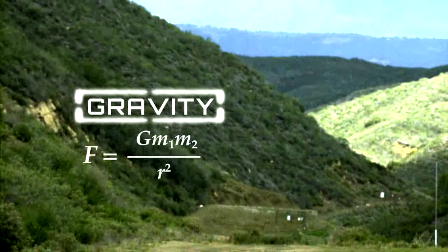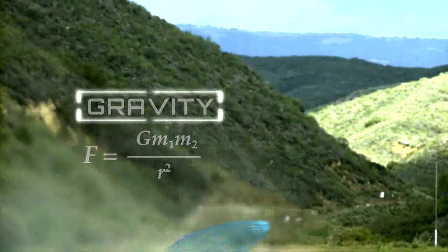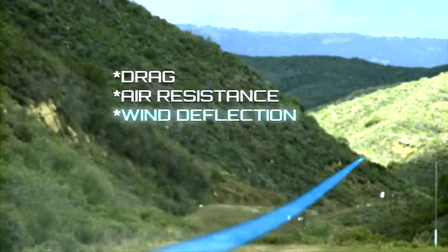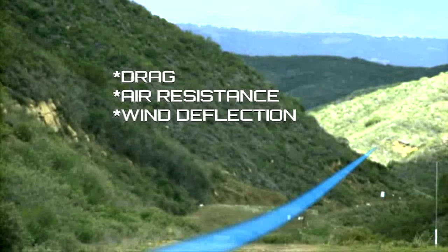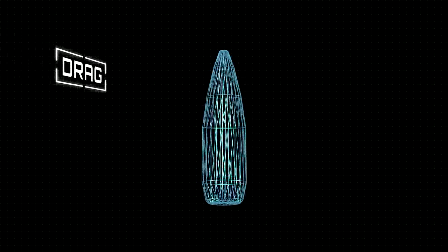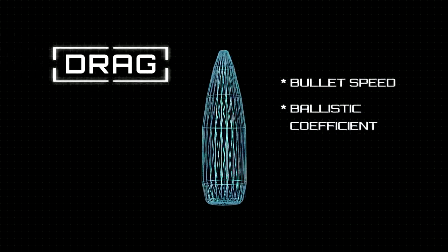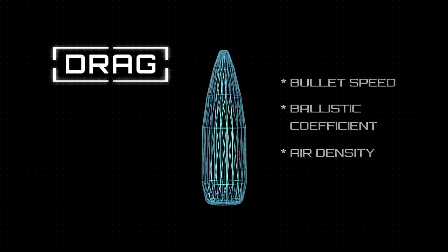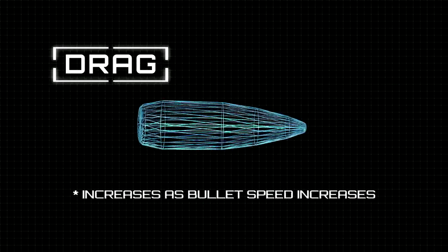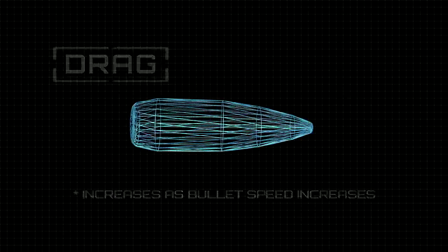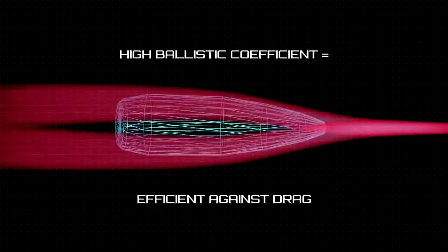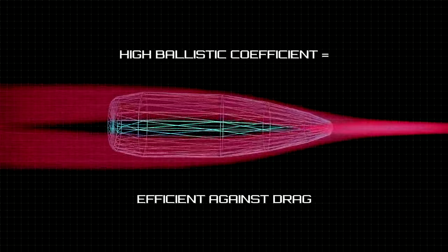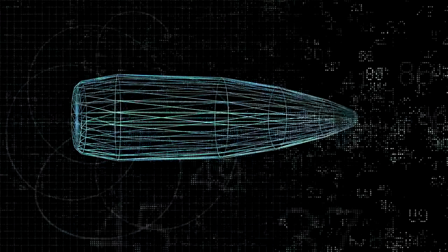Gravity isn't the only thing affecting a bullet in flight. Drag, air resistance, and wind deflection are all factors in slowing down or pushing a bullet away from its target. Drag is determined by bullet speed, ballistic coefficient, and air density. It also increases when bullet speed relative to air increases. When a bullet's ballistic coefficient is high, it is more efficient against drag.